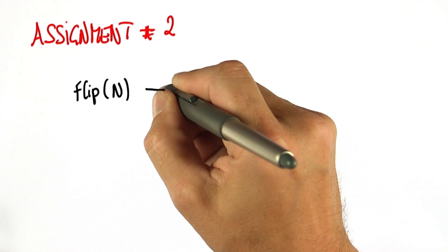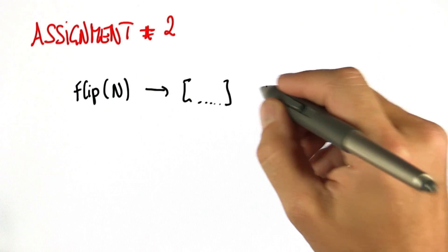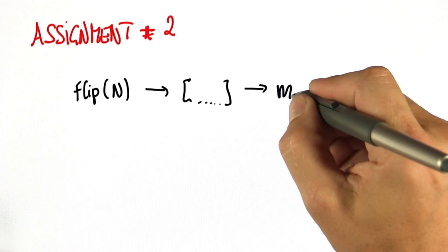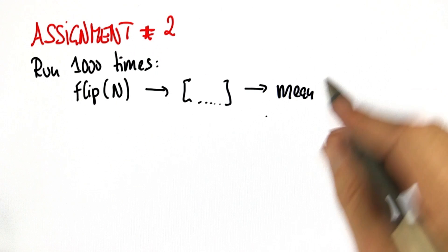Now that we have a function flip that gives me this list of 1,000 outcomes from which I can now derive things like the mean, run this thing itself 1,000 times. And each time you get a different mean.